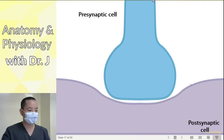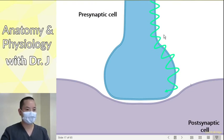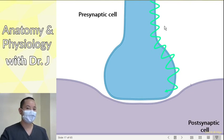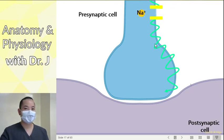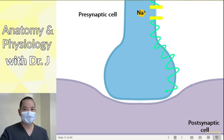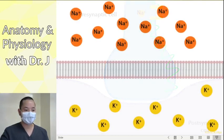Now we have a presynaptic and postsynaptic cell. All these action potentials are traveling down the axon. What's triggering these action potentials? This is why sodium matters — sodium is moving into these cells. You start with more sodium on the outside of a cell, open the voltage-gated sodium channels, sodium flows into the cells, and that sets off those action potentials.